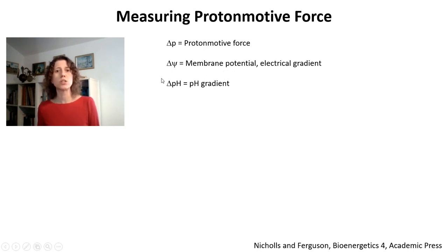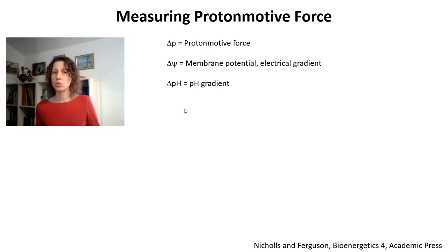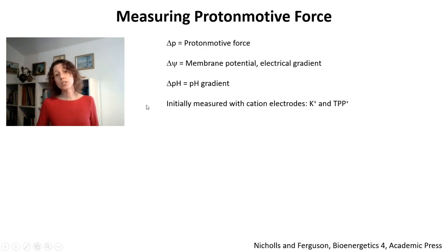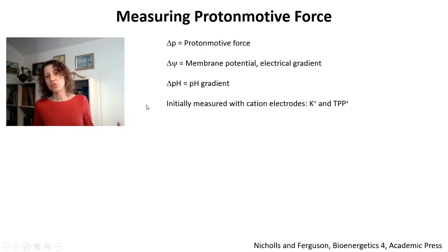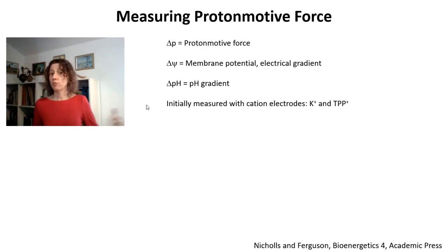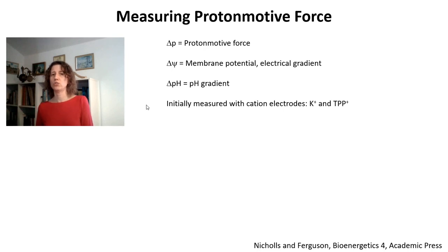We measure the membrane potential and assume that's most of the component of proton motive force. Although you can measure delta pH — we'll talk about that in the next class — it could be important depending on the conditions in which there might be a change in delta pH. Initially, in very early studies, membrane potentials were measured using radioactive markers. But later on, and for many years, they were measured using electrodes sensitive to some kind of cation that could be accumulated in mitochondria in a manner dependent on the membrane potential.